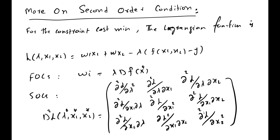This is the own second derivative of the Lagrangian function with respect to x2. The rest of the derivatives are cross partial derivatives. So in this matrix the diagonal entries are the own second derivatives with respect to lambda, x1, and x2, while the off-diagonal entries are the second order cross partial derivatives.